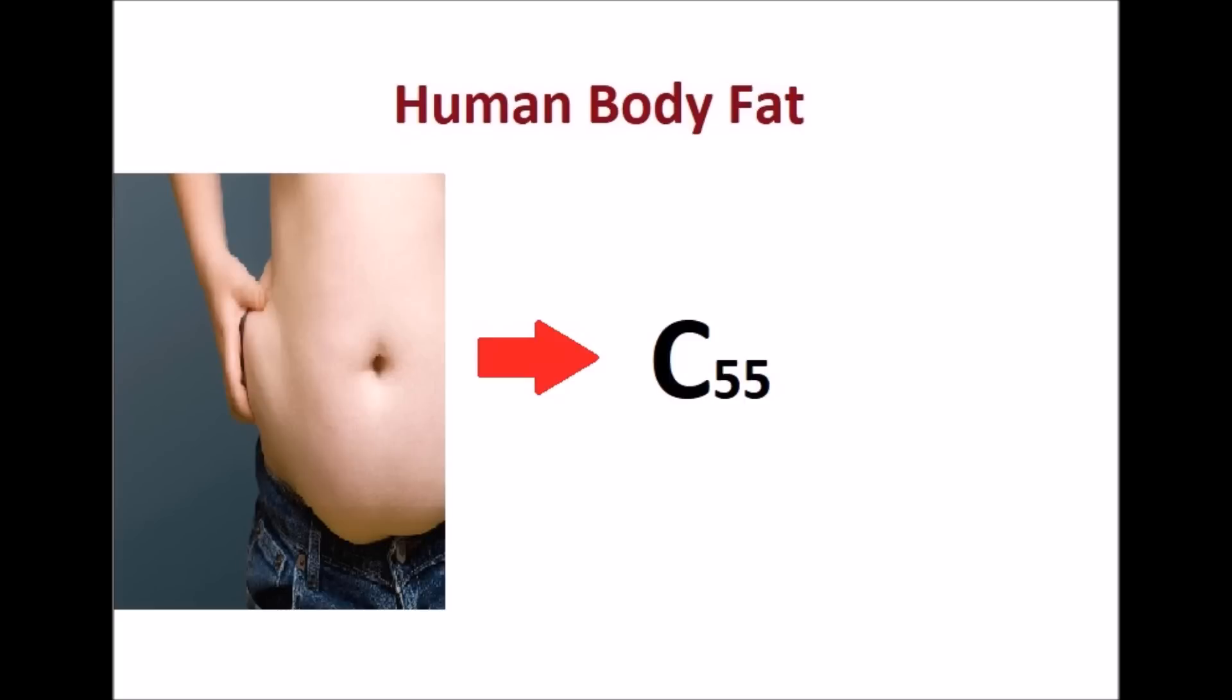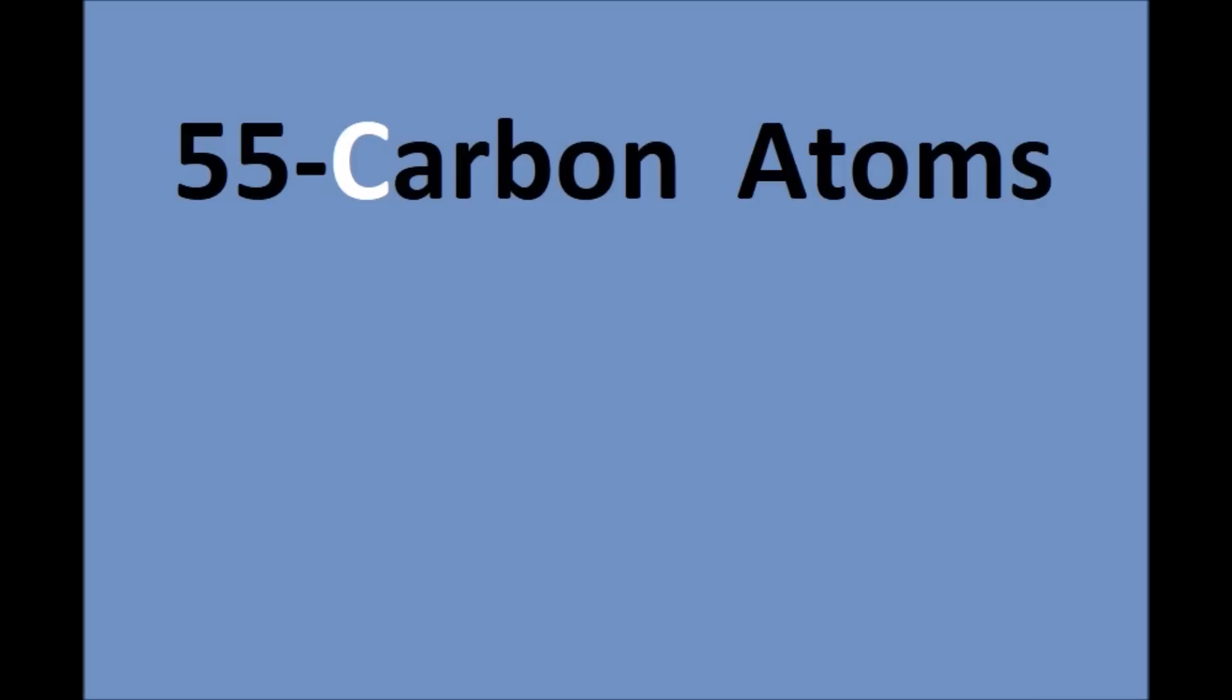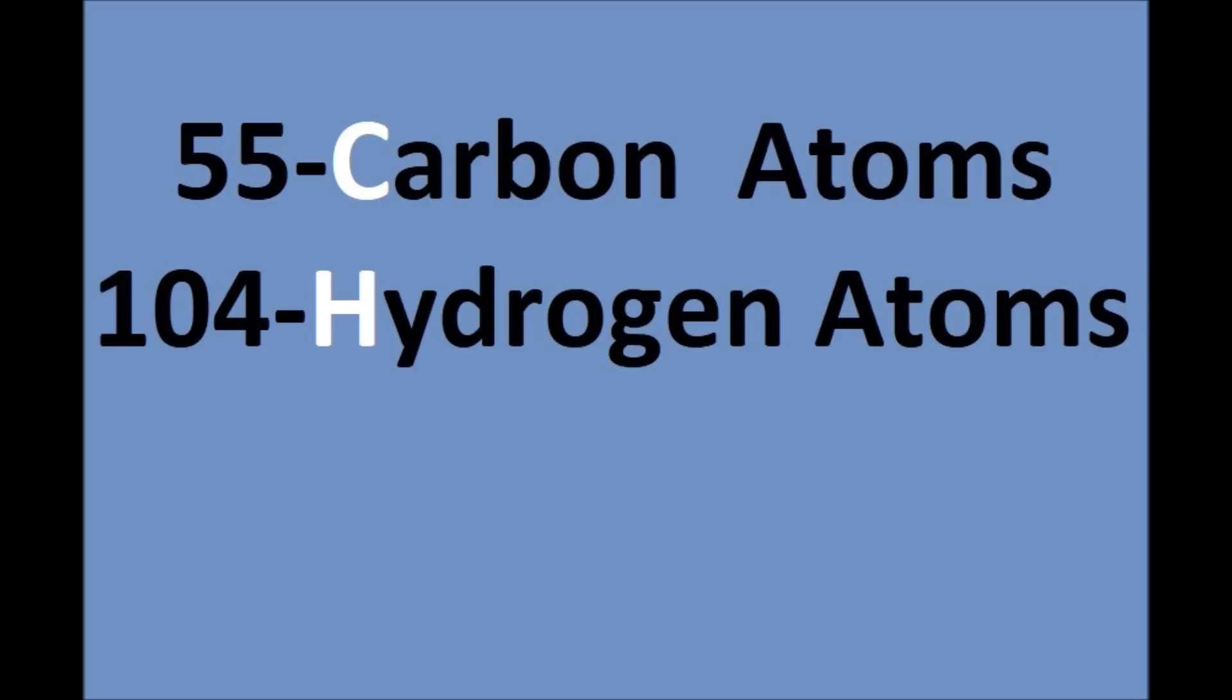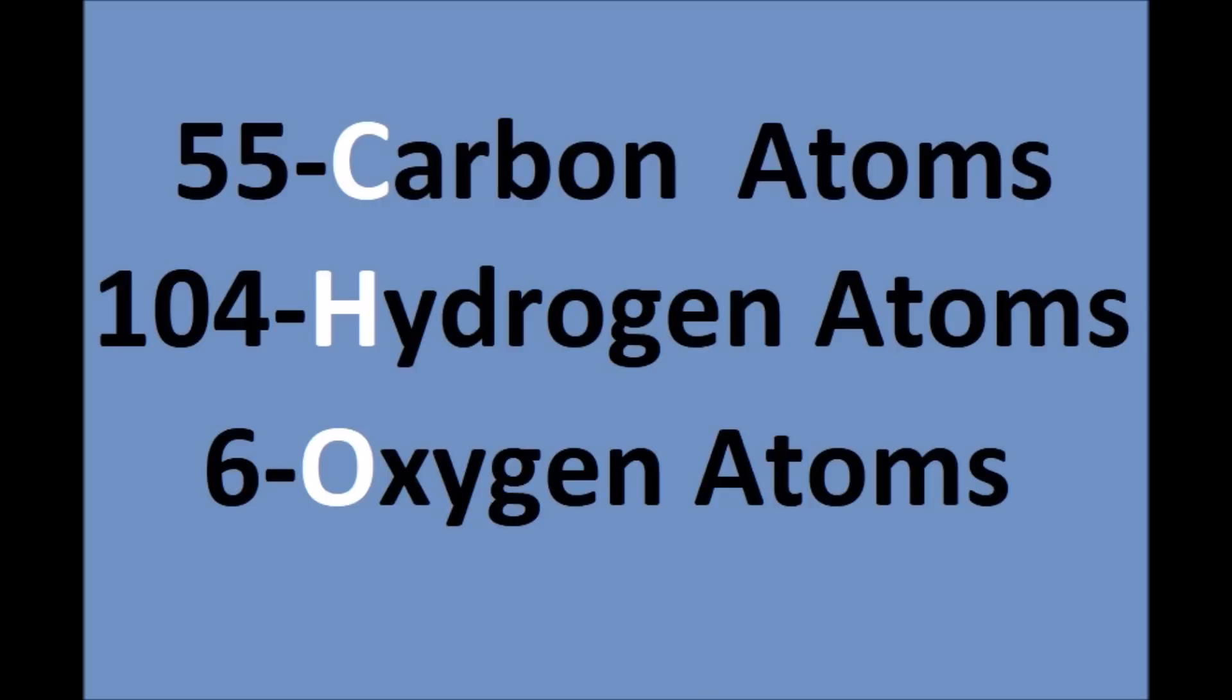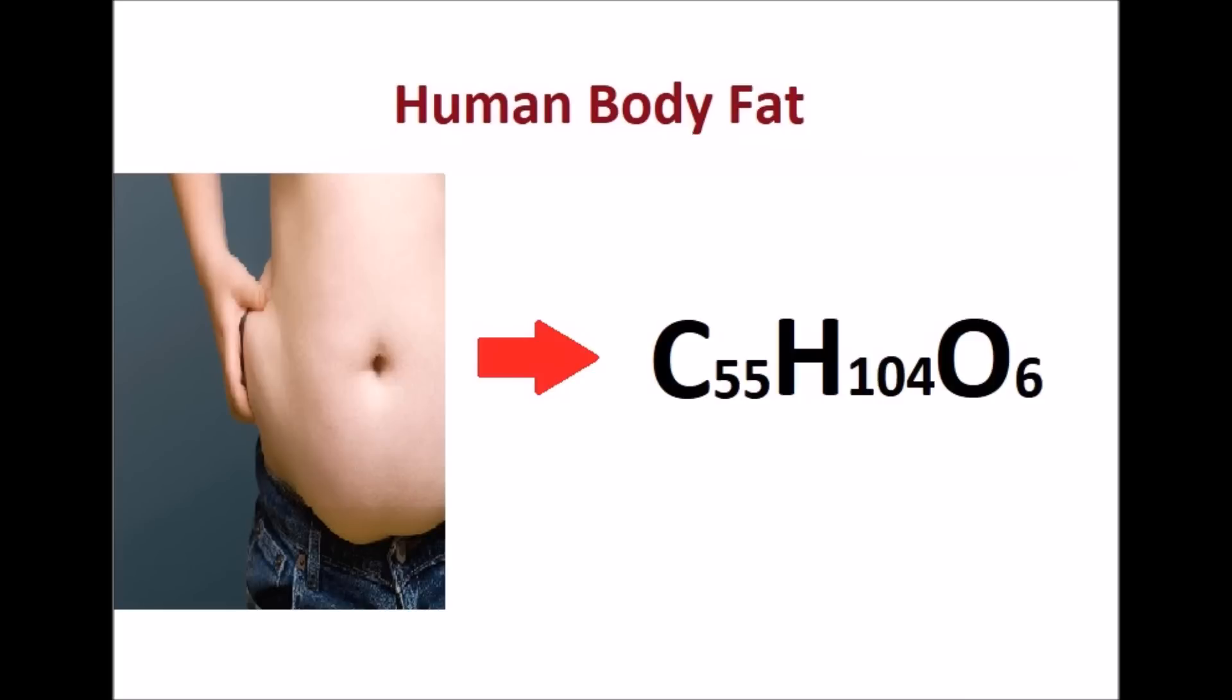The average fat molecule in a human body has a formula of C55 H104 and O6. That is 55 carbon atoms, 104 hydrogen atoms, and six atoms of oxygen. Although there are some molecules with combinations like C60 H120 O6 or C36 H72 O6, we will consider C55 H104 O6 as this is the combination of almost 95 percent of the fat molecules in a human body.